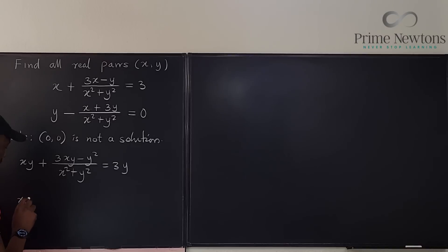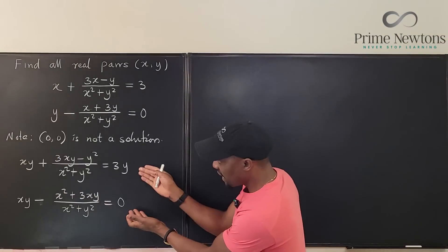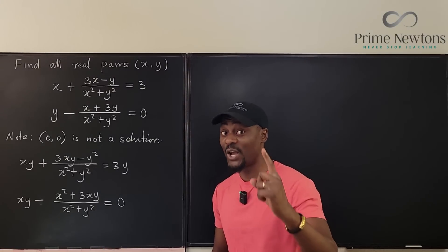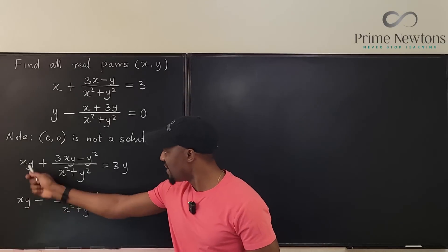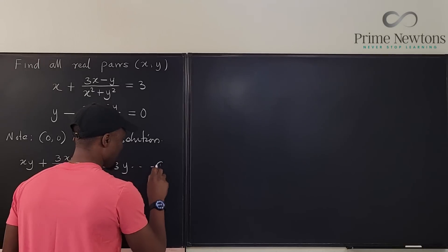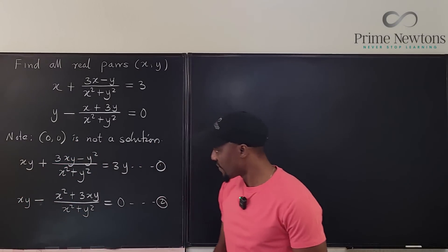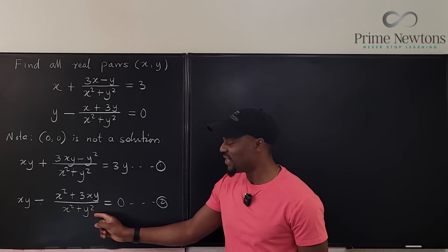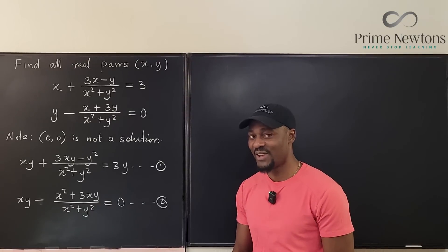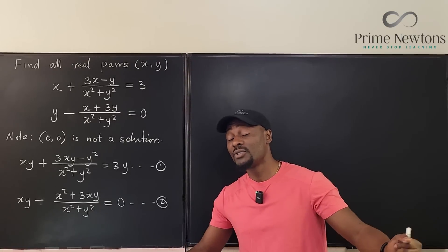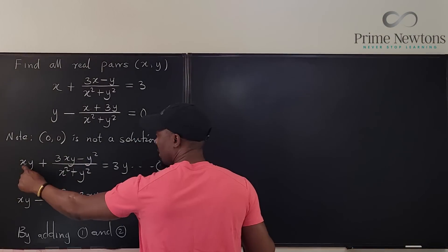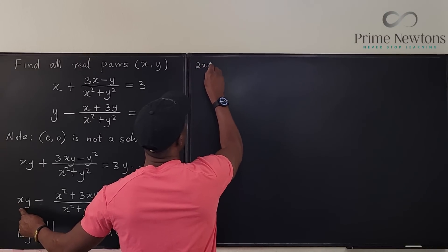There is this temptation to eliminate by subtracting one equation from the other, and that was the first thing I tried. It did work to get one solution, but when I got into the subtraction things were not as easy as I thought. So the better strategy is to add both of them together. If we add these two together, this plus this is going to give me 2XY.